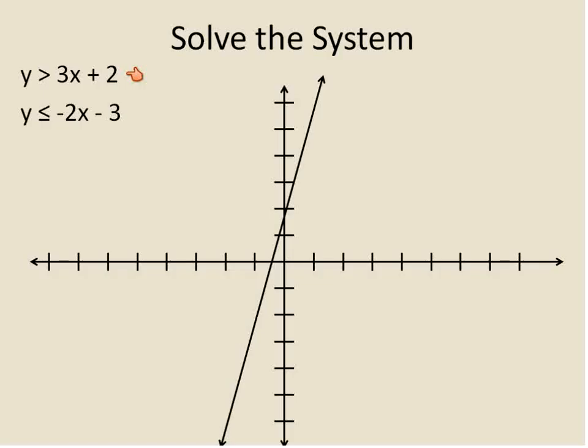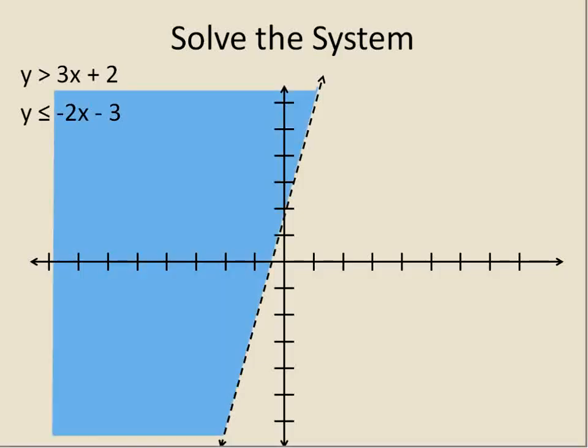Now we need to remember that this is an inequality. We have to change our line, because this is a greater than symbol. That means the equation or the solution is not this line. So we have to change it to being a dotted line. And then, because it's y is greater than, we have to highlight everything where the y value is greater than this line, in other words, everything above the line. So here is the graph of y is greater than 3x plus 2. That's the first inequality.